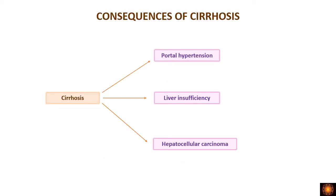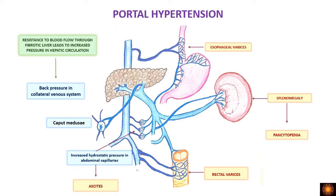The three important consequences of cirrhosis are portal hypertension, liver insufficiency, and hepatocellular carcinoma. When a person has a fibrotic liver, there is damage to the sinusoids causing resistance to blood flow through the liver, leading to increased back pressure in the portal vein and increased pressure in the collateral venous system.